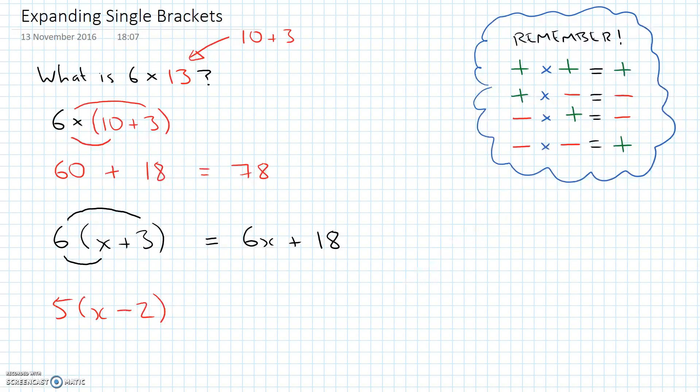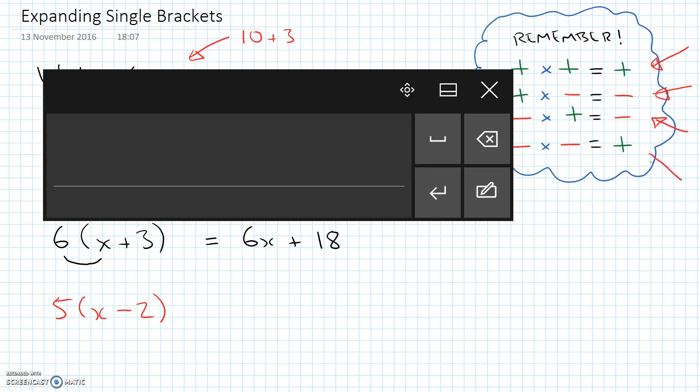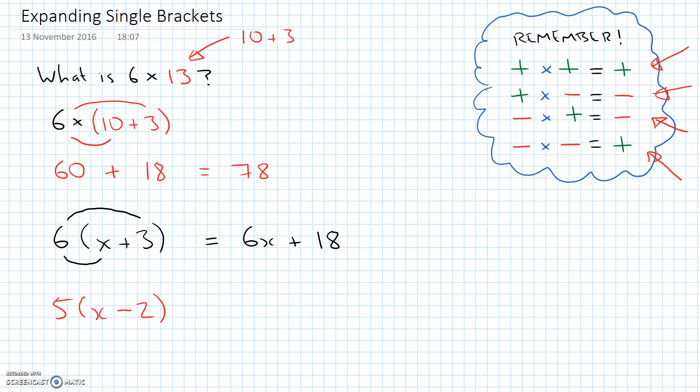So it says that any time we've got a positive value times a positive value, we get a positive. Any time we have a positive value times a negative value, we get a negative. Any time we have a negative times a positive, we get a negative. And any time we have a negative times a negative, we also get a positive. Now hopefully you've met those before. But those are essential that you learned and are really, really confident in using.